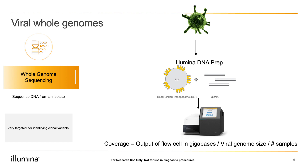To assemble a genome from scratch, you want to choose longer reads and use deeper coverage — around 500x coverage will serve you well. For resequencing, shorter reads and lower coverage, maybe 50 to 100x, is plenty.